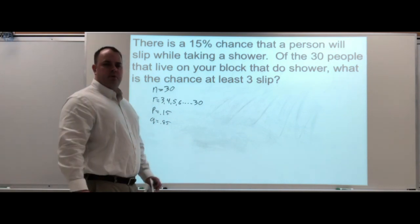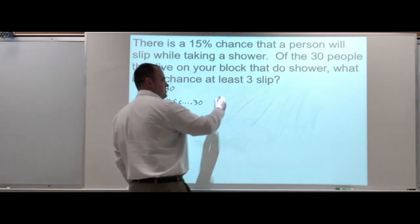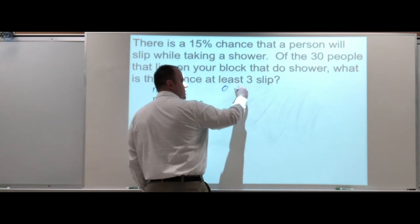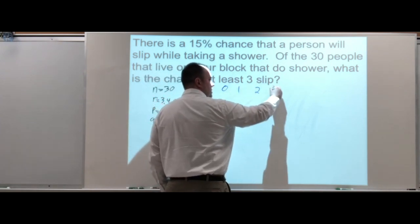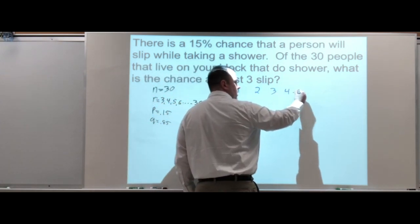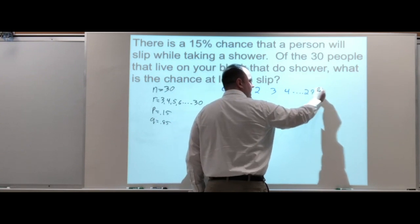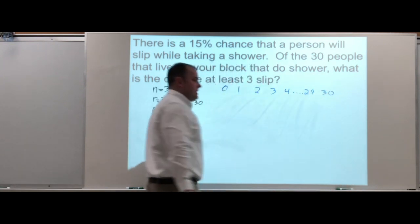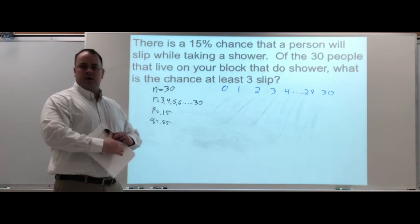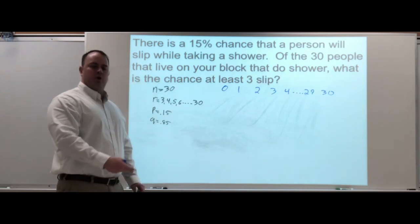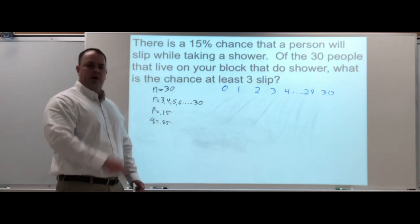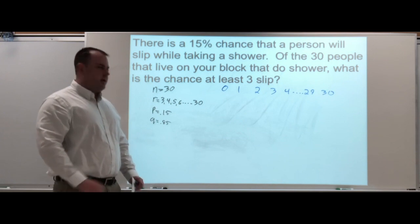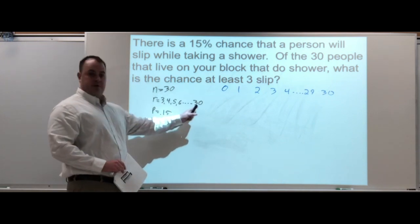Let's think of all the possible people that could slip or ways people can slip: zero, one, two, three, four... twenty-nine, thirty. That's every single possible outcome. Zero people could slip, one person could slip, or all thirty people could slip.